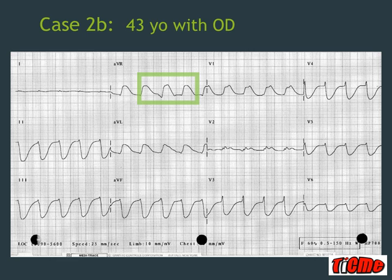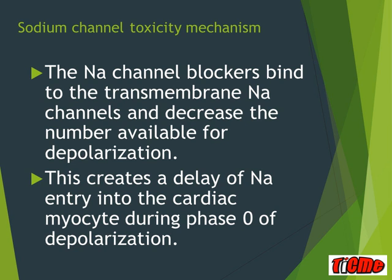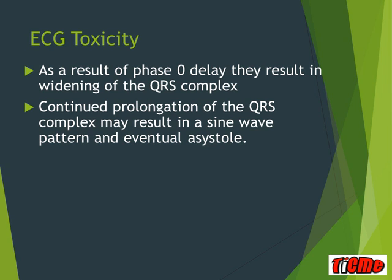This is sodium channel blocking toxicity. Sodium channel blockers bind to transmembrane sodium channels and decrease the number available for the rapid depolarization spike in phase 0. As a result, the QRS complex widens. If the QRS keeps prolonging, you can end up with a sine wave pattern and eventually asystole, as seen in that second ECG which was becoming broad and ugly.